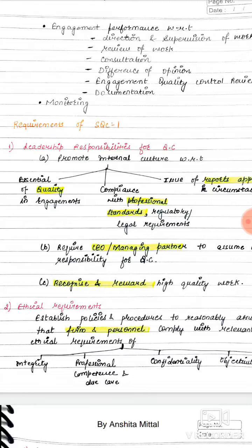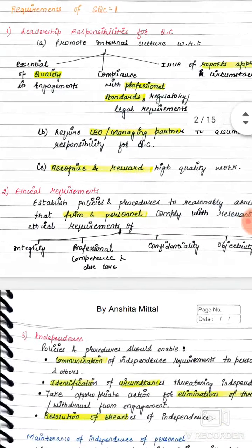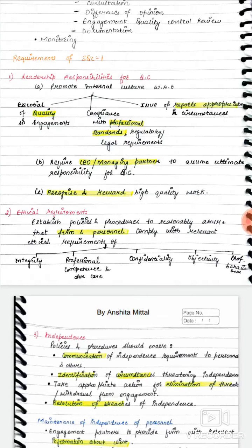The ultimate responsibility for quality control lies with the CEO or managing partner. Now, if good quality work is done — work that is performed in the required manner — you should recognize and reward that high quality work. Why? Because when you give recognition, your employees and team get motivated. A motivated workforce will continue to strive for quality. If your workforce is not motivated, no work can be done well.